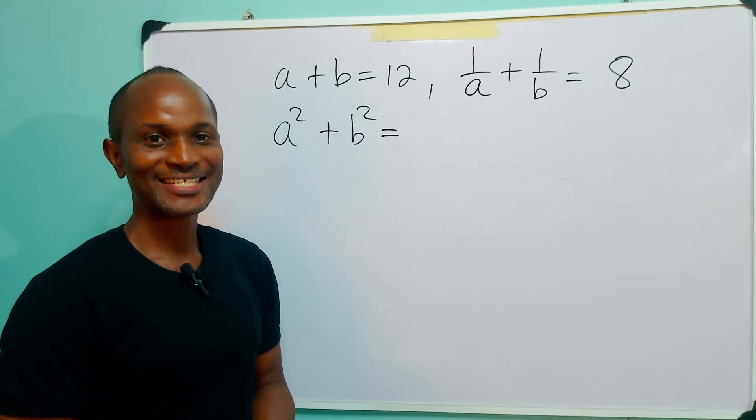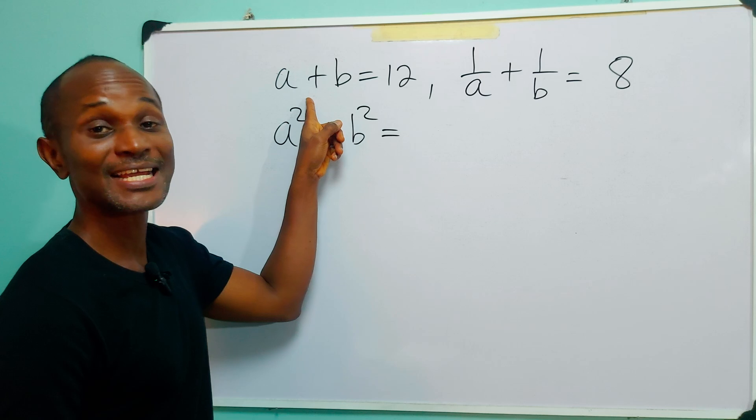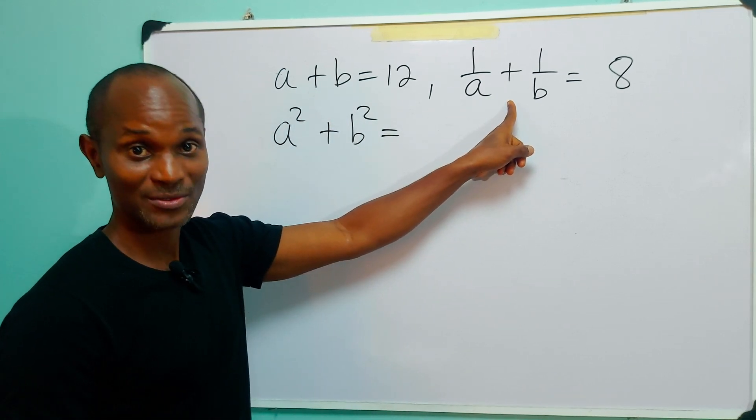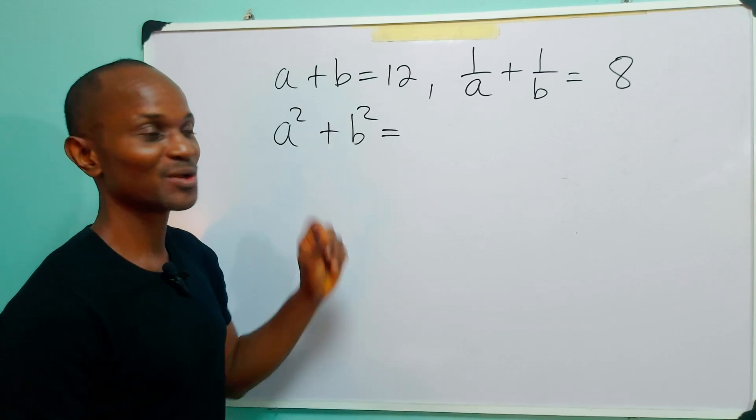Hello and welcome. Our task for today is to solve this rather common SAT question in which we are given that A plus B is equal to 12 and 1 over A plus 1 over B is equal to 8, and we are required to find the value of A squared plus B squared.